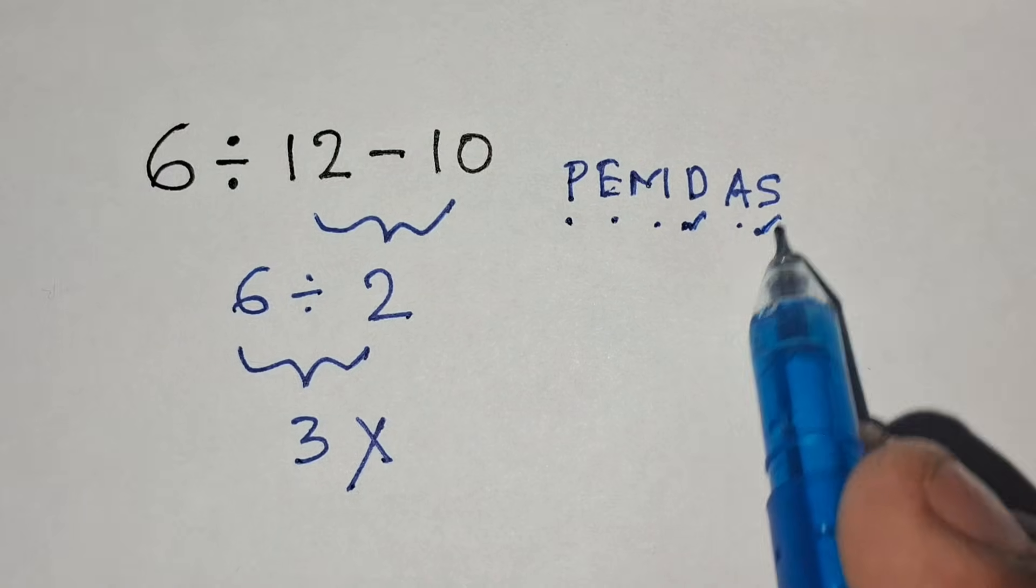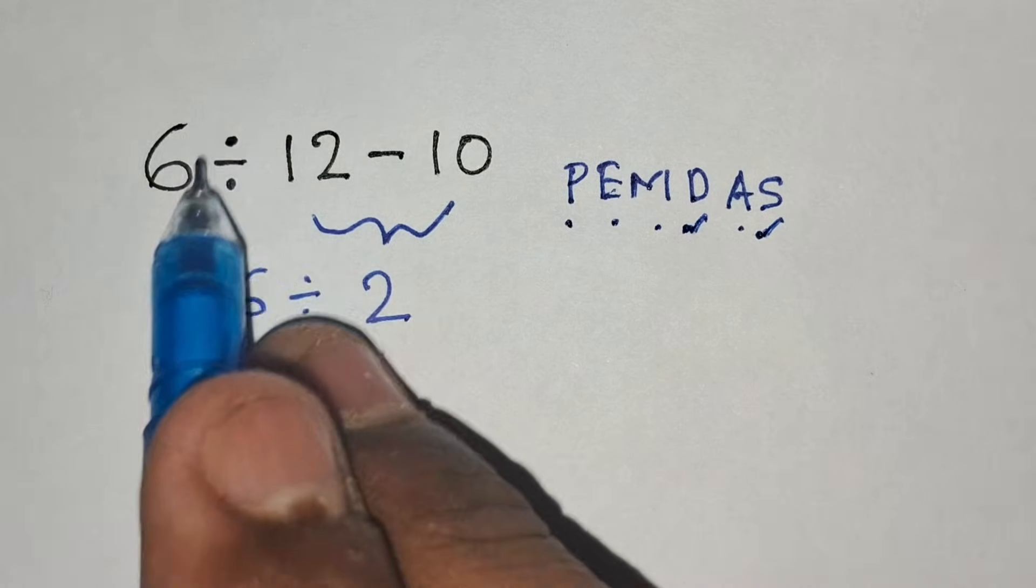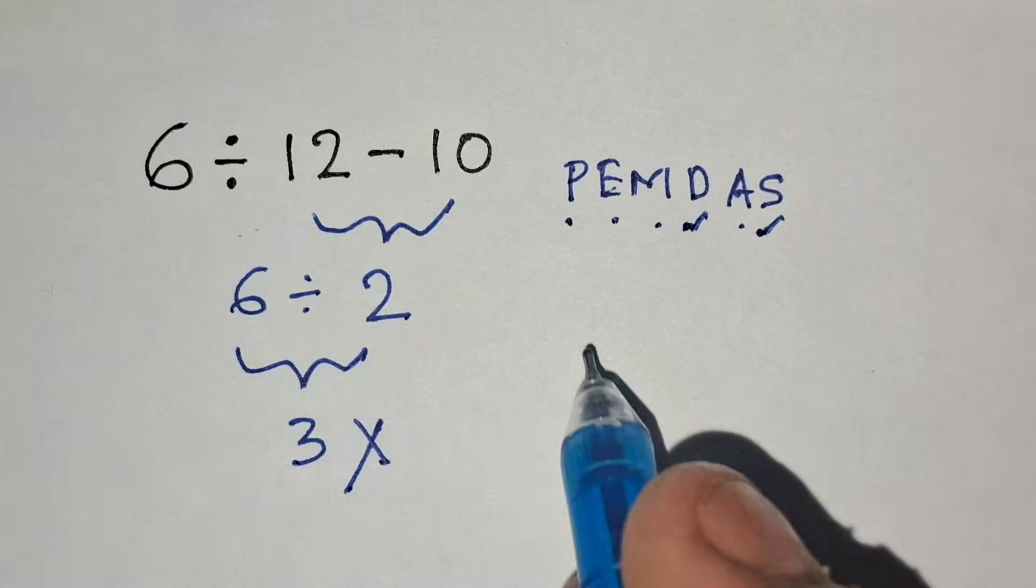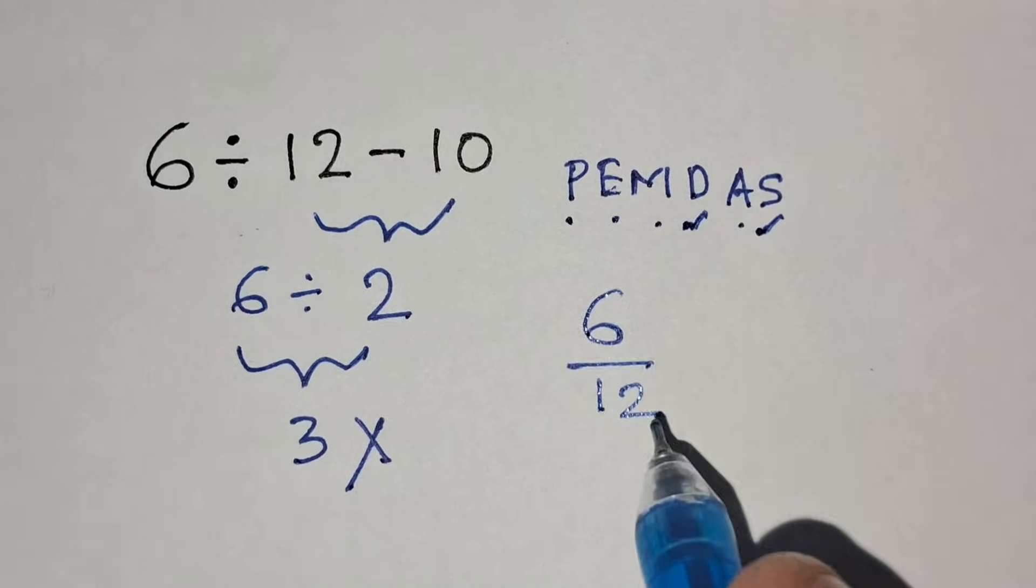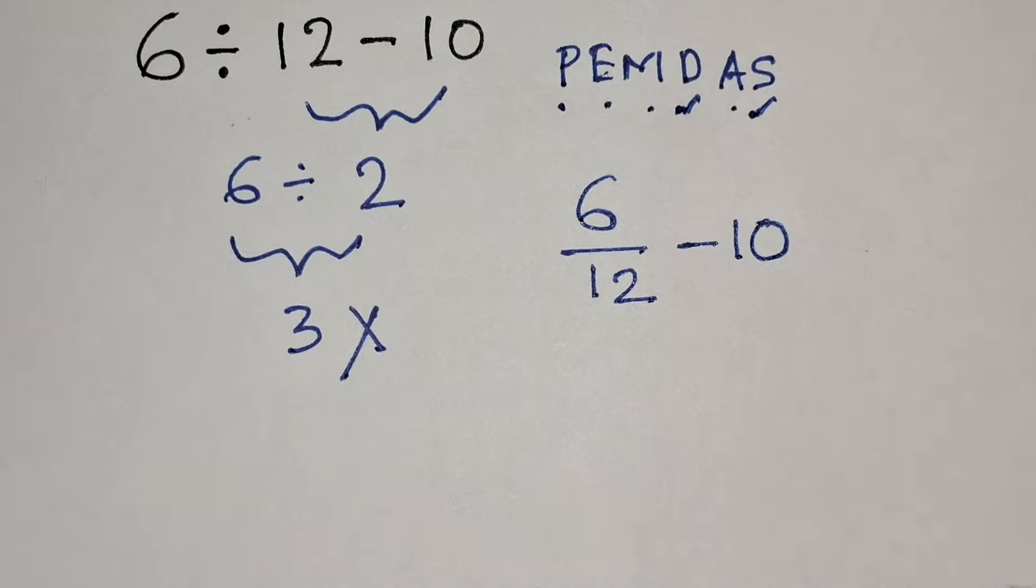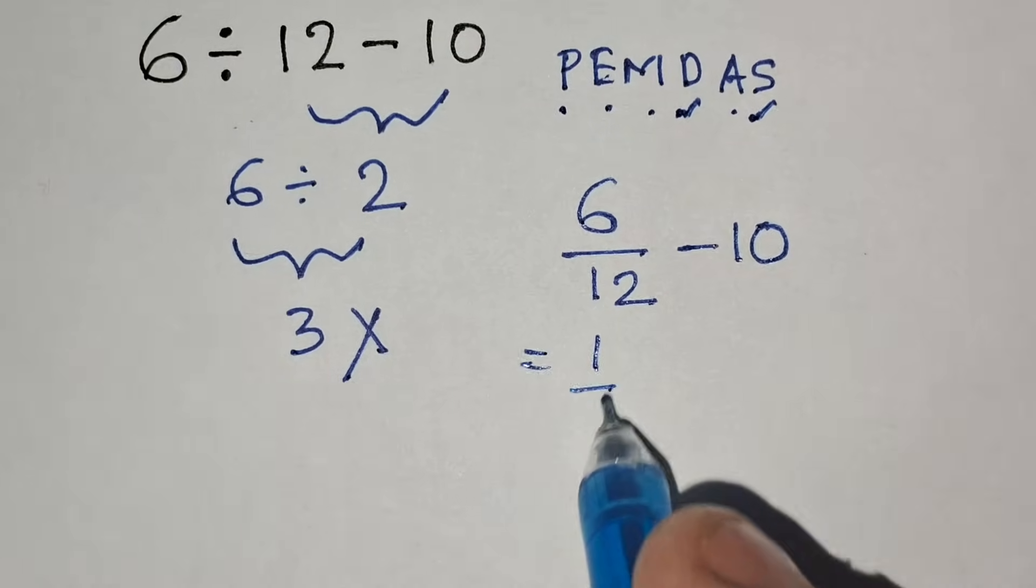So first we have to solve division, then subtraction. 6 divided by 12 minus 10 equals 6 divided by 12, minus 10. 6 divided by 12 equals 1/2 minus 10.